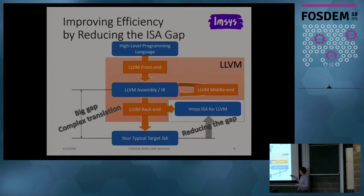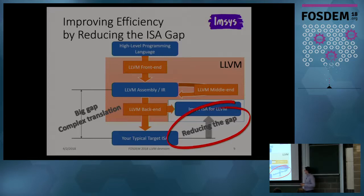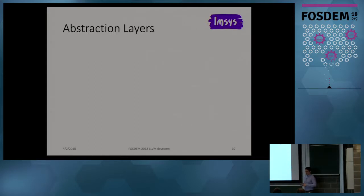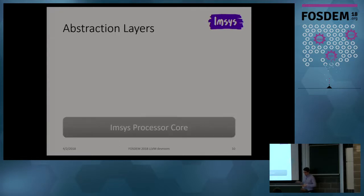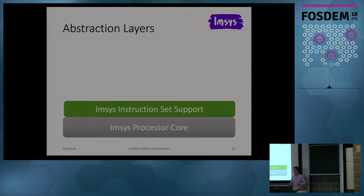The topic is about how to reduce the gap and have a tailor-made instruction set architecture for LLVM. So first, I'll tell you about the technology we use to reduce the semantic gap. Looking at the software abstraction layers, we have the IMSIS processor core which supports an instruction set architecture. Our instruction set support provides basically two instruction sets: ISA-L, that's for LLVM, and ISA-J, which is an instruction set architecture for Java.